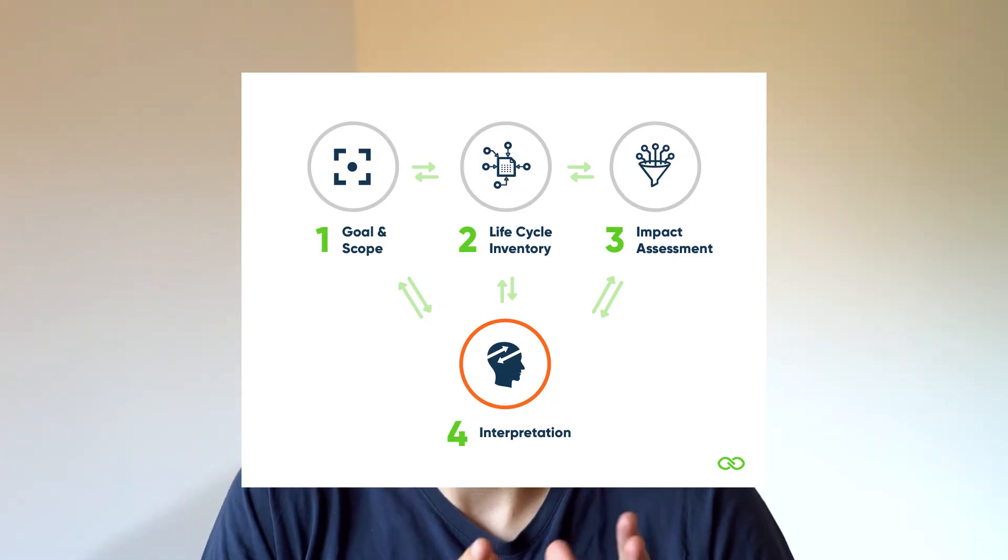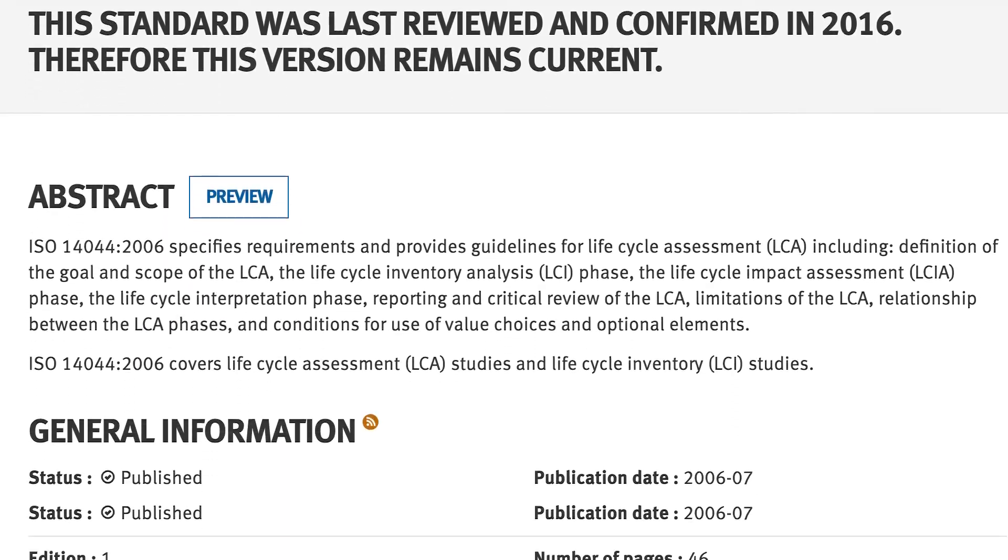So let's recap: we started by defining the goal and scope of our analysis, then we collected all the data we needed in an input-output flow model, and then we unified that data in one or more impact categories. Now we have our numbers — and what do we do with that? We still need to interpret the data, and that is phase four of our life cycle assessment. ISO 14044, which is the norm that defines LCA, describes what we need to do in the interpretation. We basically need to conduct a sanity check on our assessment, also called a sensitivity assessment. An LCA is a complex analysis, and we need to clearly define where our analysis has limitations and how consistently it was conducted.